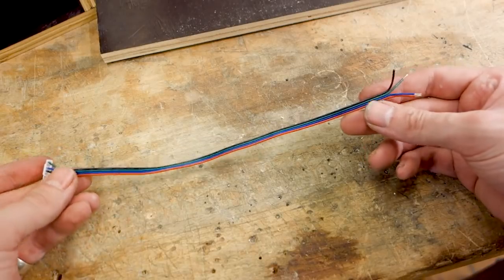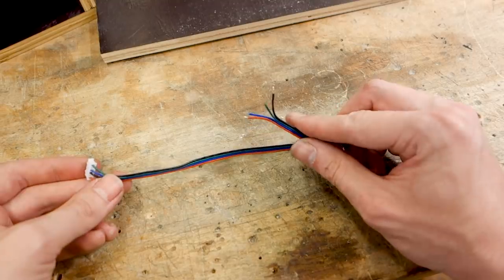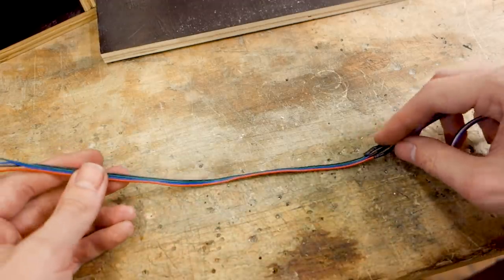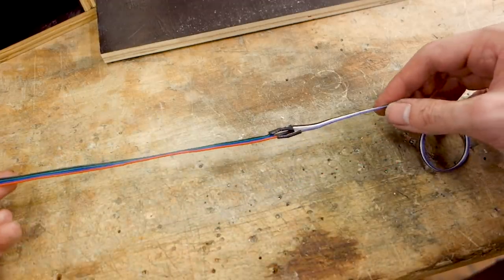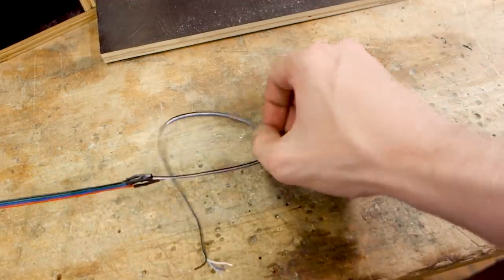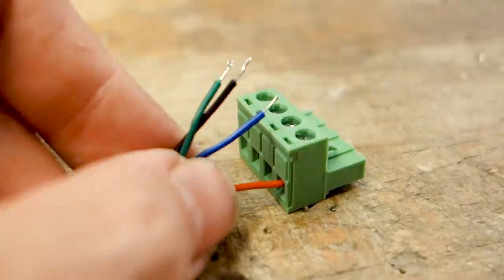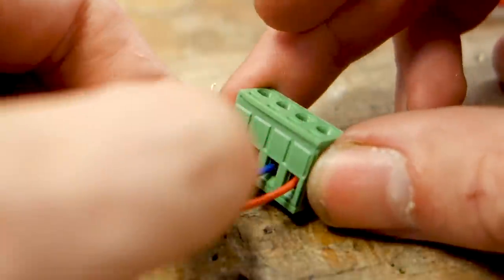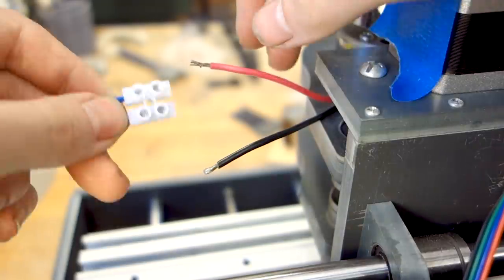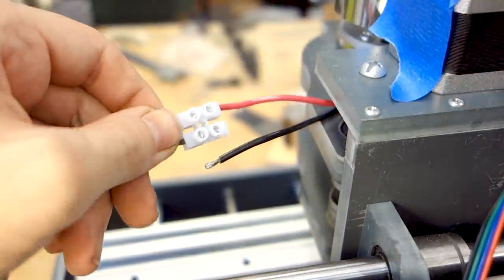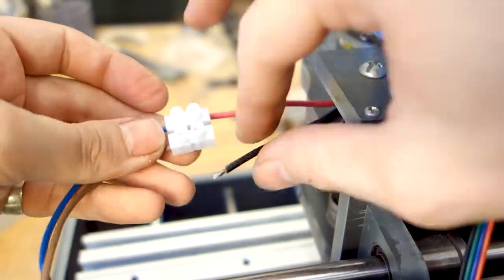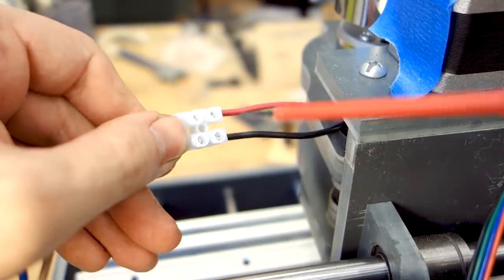The cables provided for the NEMA 17 stepper motors are just too short to reach the electronics any way you put them, so you will need to extend those cables with new cables. I simply soldered on a piece of ribbon cable and connected them to screw sockets that fit into the stepper driver board. The same thing unfortunately goes for the spindle motor, but as it carries more current, make sure you use thicker cables. But instead of soldering these on, I connected the extension cables with screw terminals.